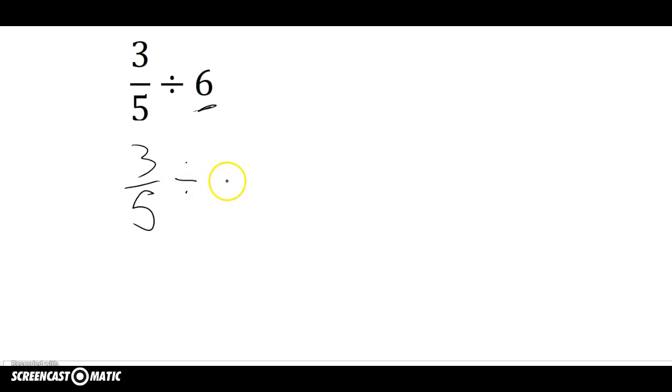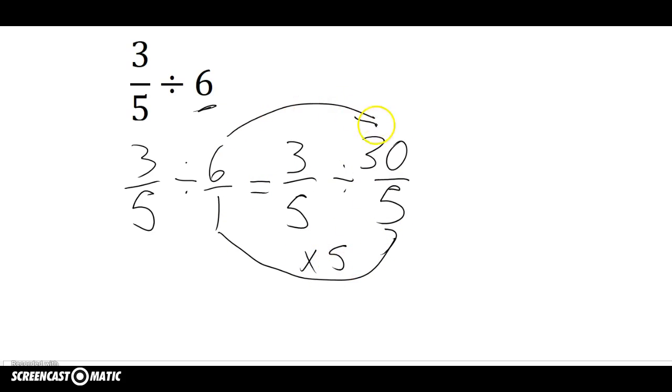So I'm going to start by making my six into a fraction by putting six over one. And then I'm going to convert them into like fractions. So I'm going to do three-fifths. And the lowest common denominator would be fifths. And this is going to give me thirty-fifths. Multiply one times five, that gives me five.